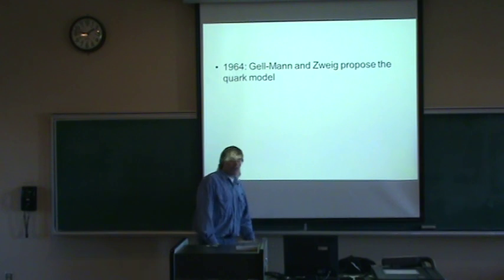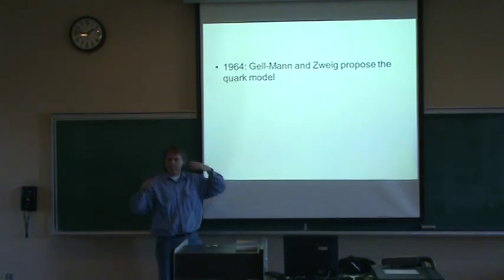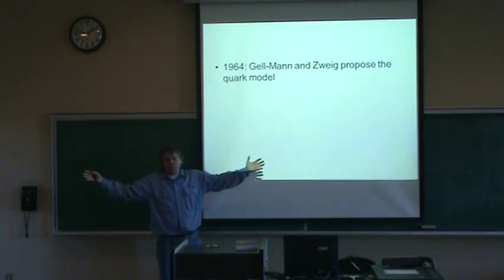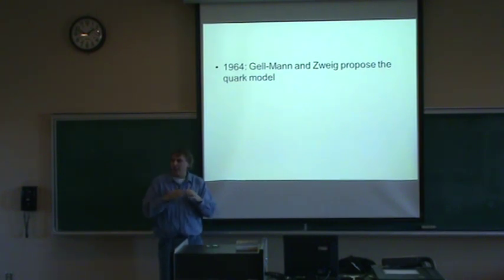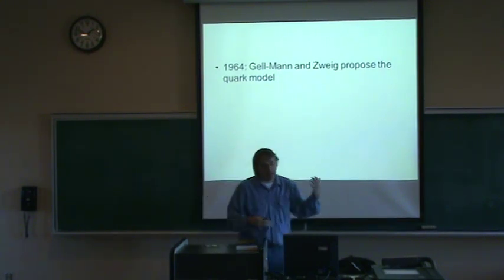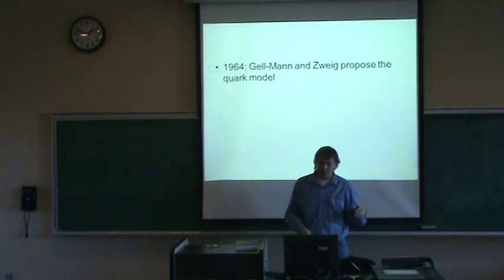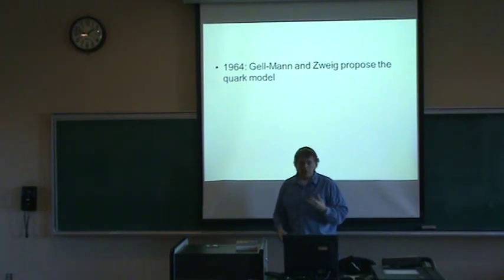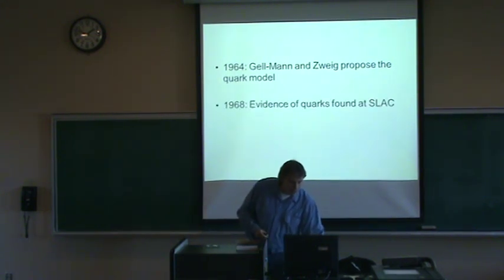Okay. Now, why? Why do we have this SU(3) symmetry? It was then realized that it was because all those hadrons are made of quarks. So now, instead of having dozens and dozens of hadrons, well, we have them, but now we understand that they have been all made of quarks. Like maybe when we realize that the elements, all the elements are made of protons, neutrons, and electrons, we know that hadrons are made of quarks.